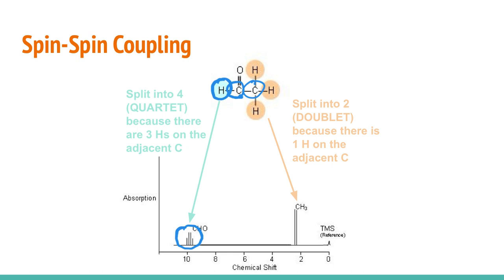If we look at the other side, this carbon here, this methyl group is split into a doublet. And that's because on its adjacent carbon, there is one hydrogen attached. So in general, if there are N number of hydrogens on an adjacent atom, the signal for that particular proton is going to be split into N plus 1 peaks. So it always gets split into one more than the number of protons there is.